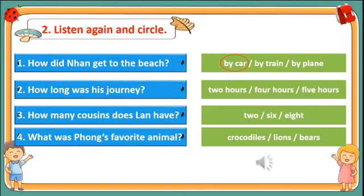My name is Phong. This year we didn't go away for vacation — we had our vacation at home. My parents didn't go to work for two weeks, and we went to different places together each day. We went to the movie theater and the zoo. At the zoo, we saw giraffes, lions, bears, and crocodiles. I liked them all, but my favorite was the lions. Now let's check the answers.